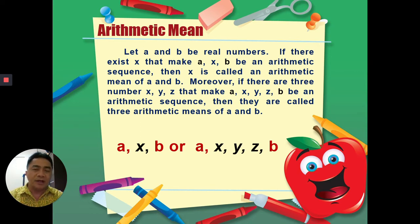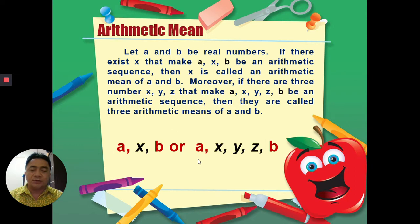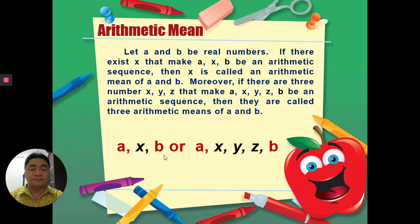If we're going to find three arithmetic means, there are five terms in that sequence. The givens are the first term and the fifth term, and we need to find the three arithmetic means which are the second, third, and fourth terms. So for finding one arithmetic mean of a and b there are three terms, and for finding three arithmetic means x, y, and z of a and b there are five terms.